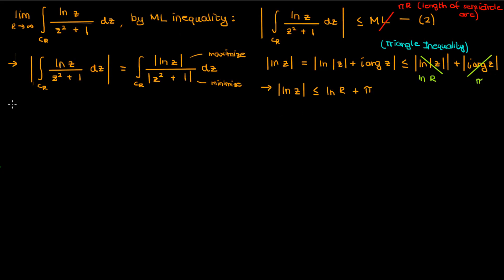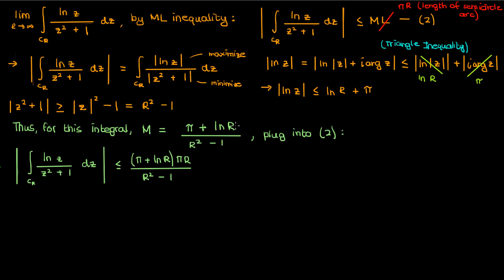For the denominator, the minimum possible value is found by using expressions which the denominator must be greater than or equal to. Using this logic, the magnitude of z squared plus 1 must be greater than or equal to the magnitude of z squared minus 1. This should make intuitive sense. Therefore since we're on the semicircular contour C_R, the minimum possible value of the denominator is r squared minus 1. And as a result we can write our m for this integral, our maximum possible value, as the following. And if we substitute this into the ML inequality in equation 2, we get the following equation.